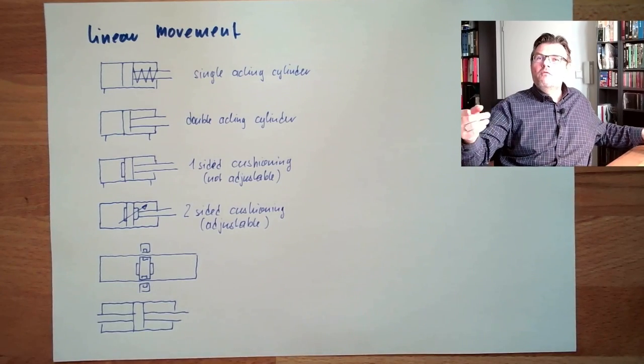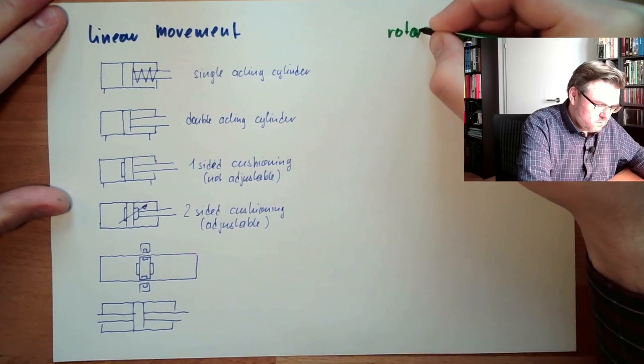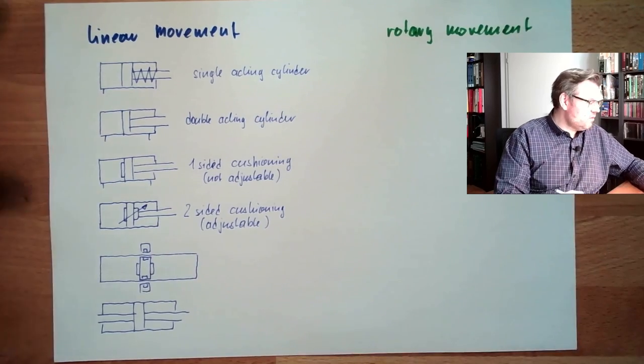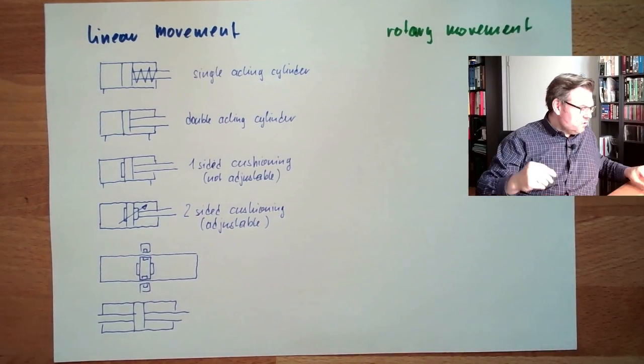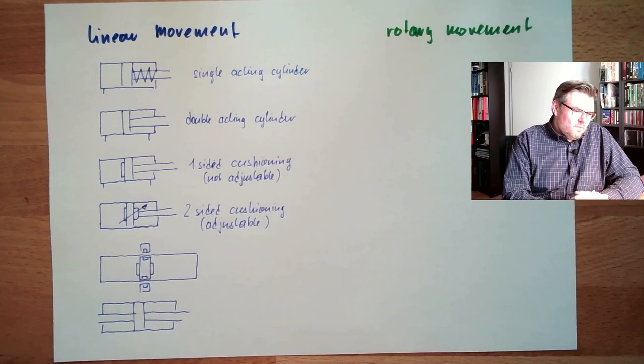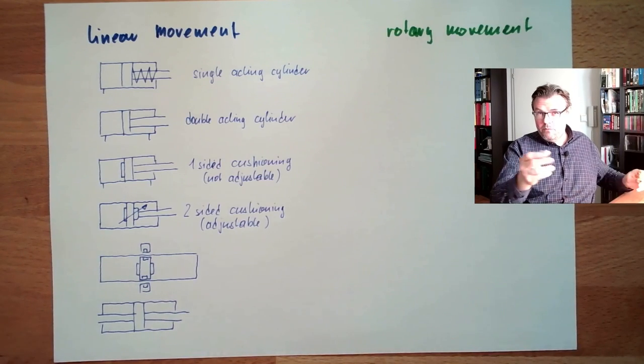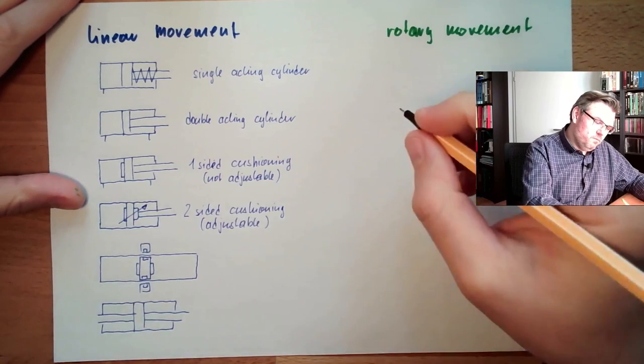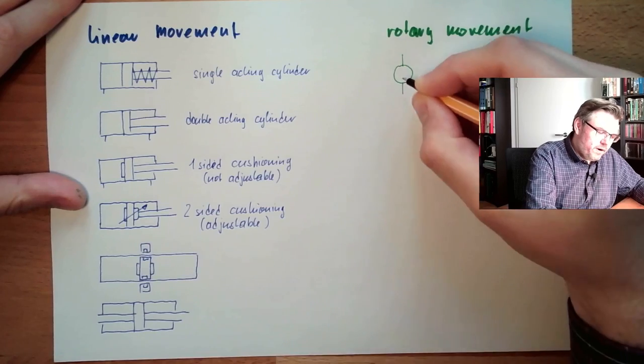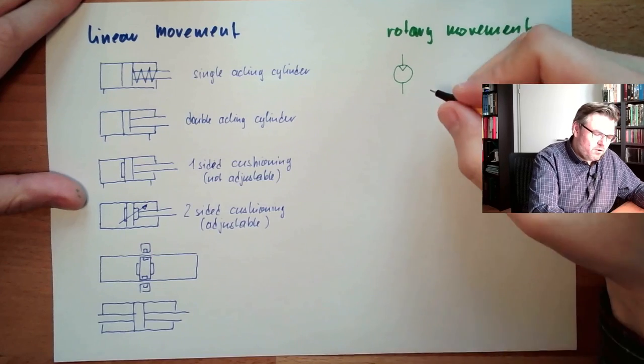On the other side, we have rotary movement. We have not even really talked about this. So there are also pneumatic motors. Pneumatic motors usually work the same way as compressors. So they have a pretty similar symbol. Pneumatic motor, for instance, looking like this, almost like a compressor. But this time, this arrow goes inside. So this is a pneumatic motor.